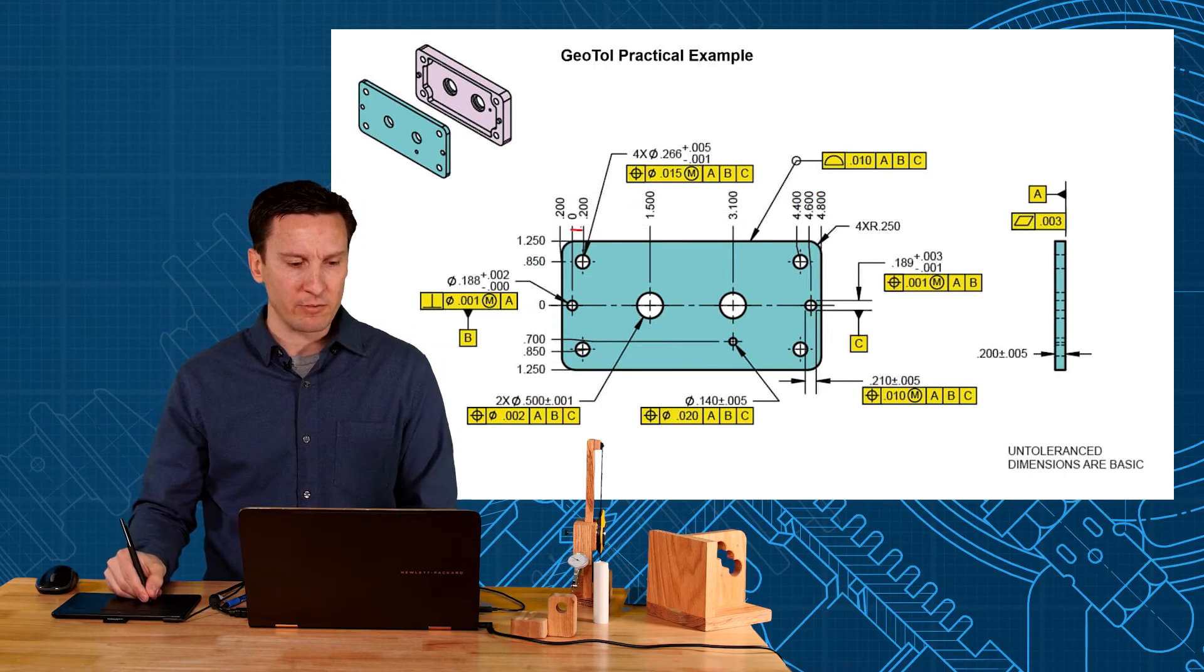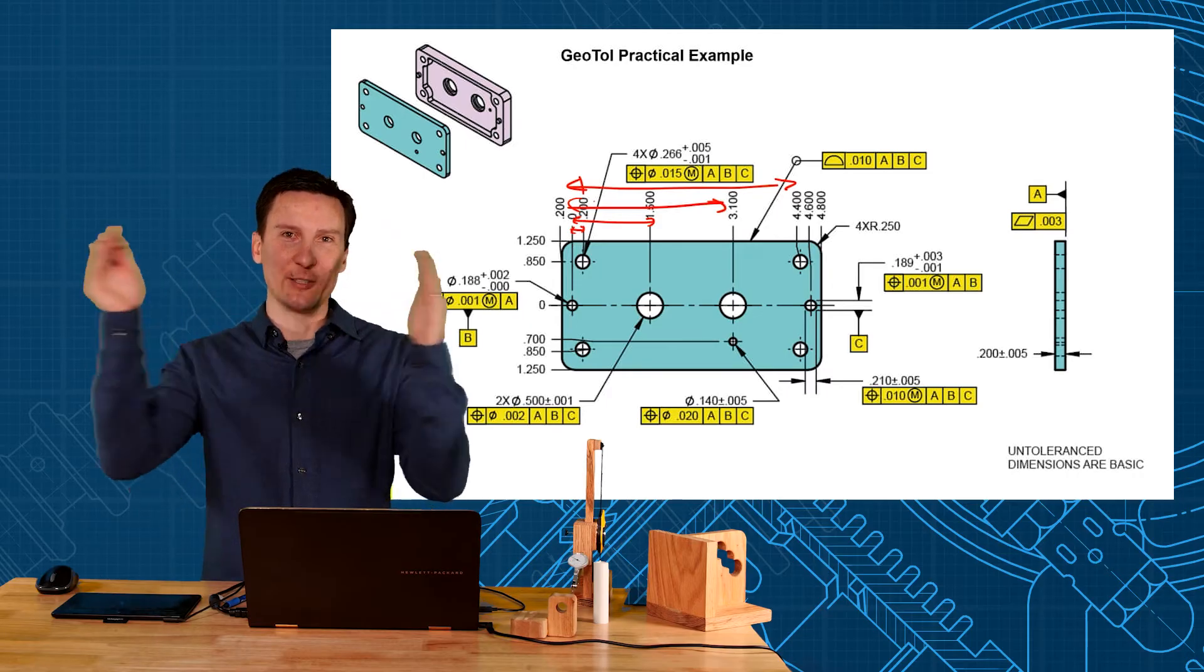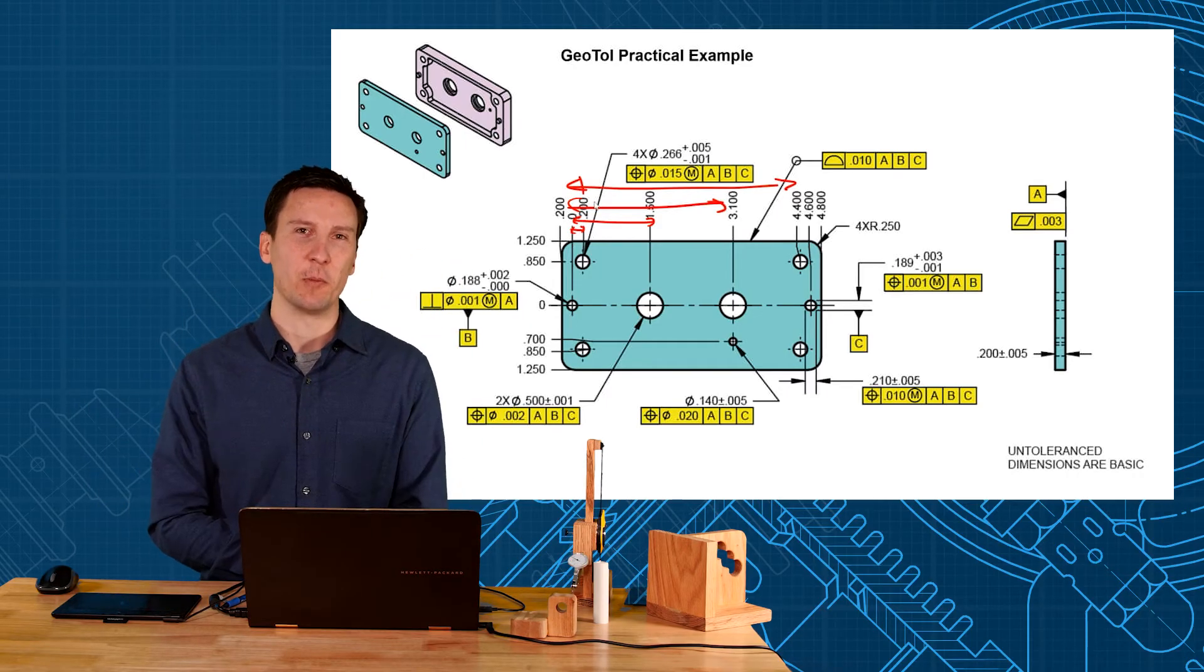This prevents you from having to do all these dimensions like this which gets very crowded and hard to see a part that has all these lines going across it. So just using the zero plane, much better.